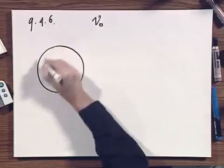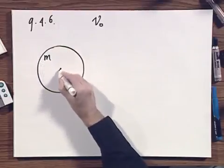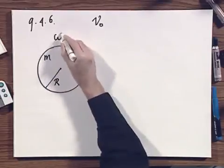Here is a wheel of the airplane. It has a mass M and it has a radius R.